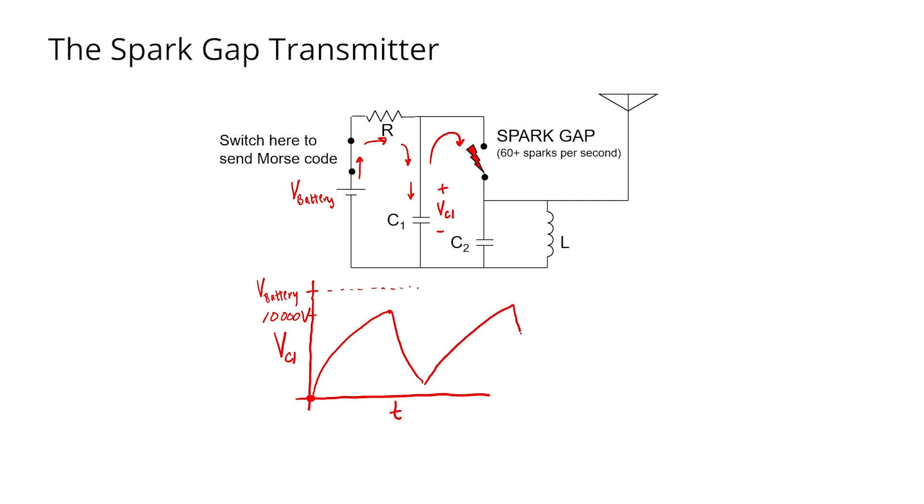So we'll eventually end up with some signal across capacitor C1 that corresponds to the sparking frequency, where we get a spark every time the capacitor C1 discharges into capacitor C2. The time it takes for capacitor C1 to discharge into C2 depends on the specific values of the capacitors that I choose, but typically this would be very fast compared to the amount of time that C1 charges through resistor R.